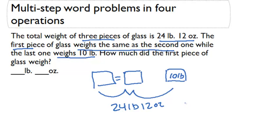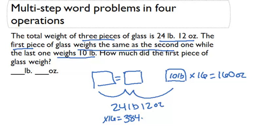The first thing we want to do is get everything into ounces so we can work with just one unit. 10 pounds times 16 ounces per pound is equal to 160 ounces — that's the weight of the third piece of glass. Our total, 24 pounds and 12 ounces, is 24 times 16, which equals 384, plus the 12 we already had, which equals 396 ounces total across all three pieces.